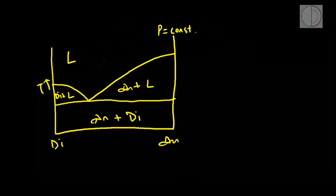For this video, we will be looking at the eutectic system of diopside and anorthite, which has two components: one is the diopside component and the other is the anorthite component.